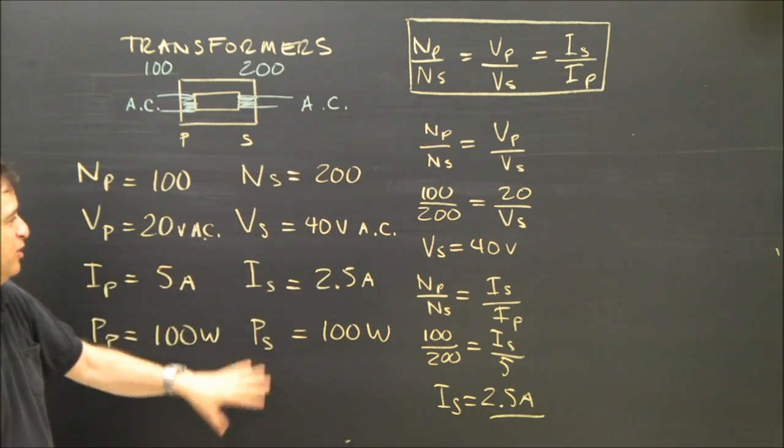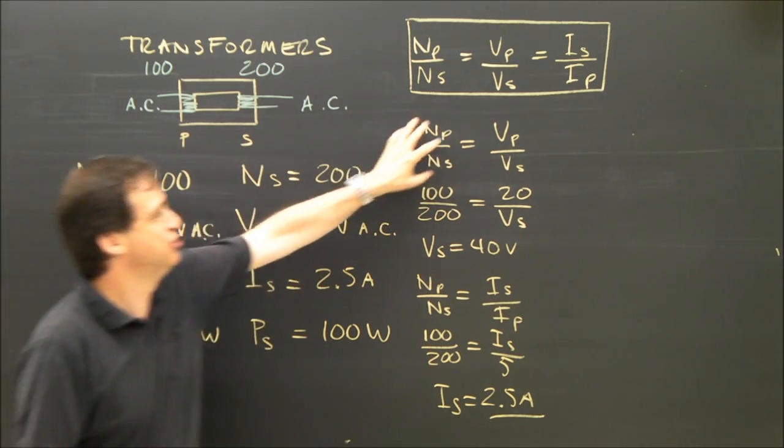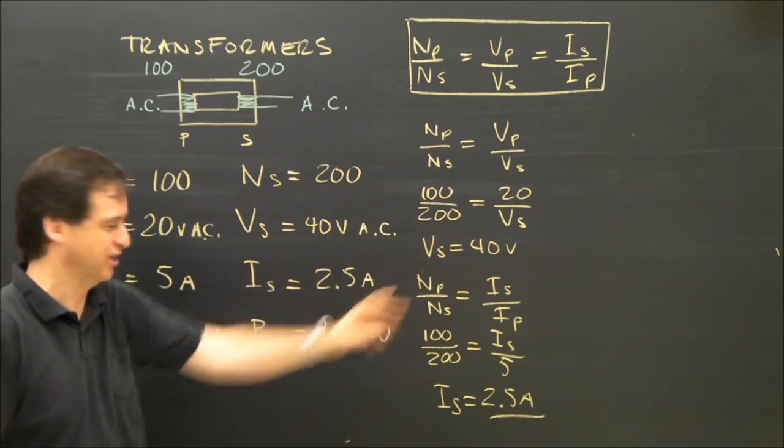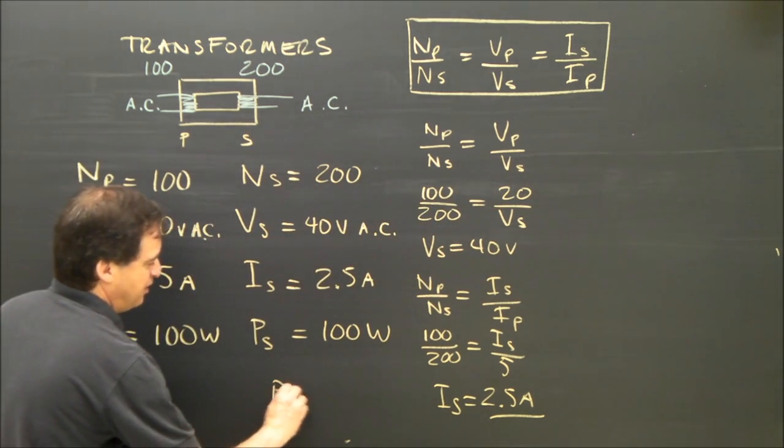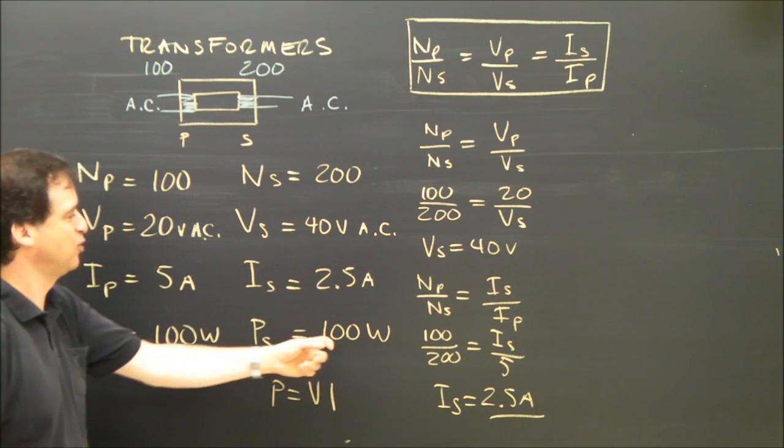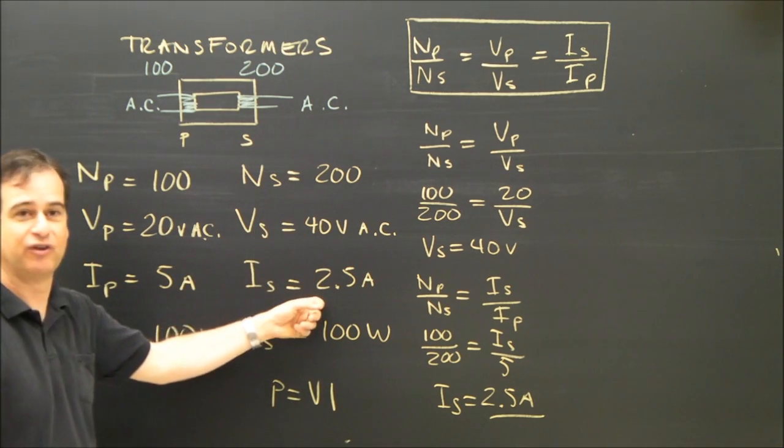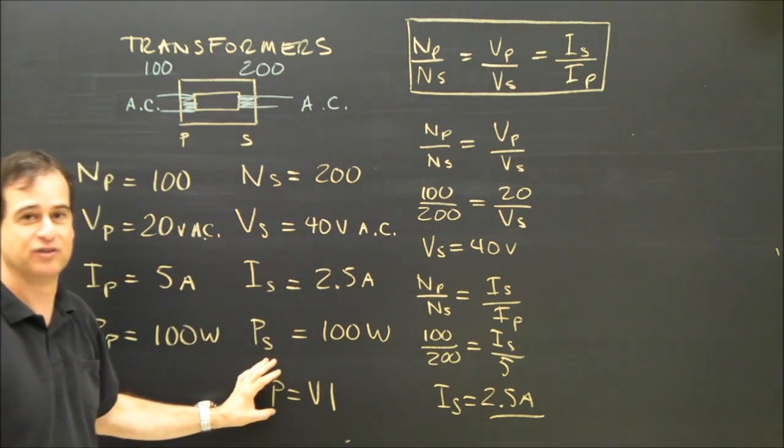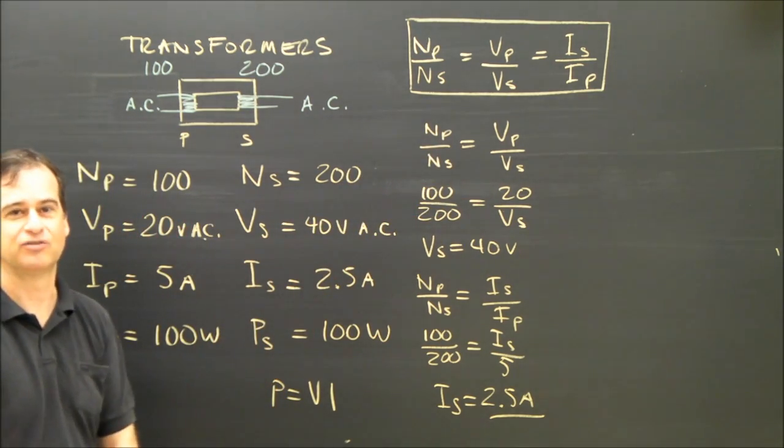Sometimes you get an arrangement of the question where you don't have enough information to use this formula yet. And you need something in here before you can use it. That's where this, P equals V times I. So if I knew the power and I knew the voltage, I could figure out the current without using this. So you've got to look at whether it's this formula or this formula. And that's basically transformers.